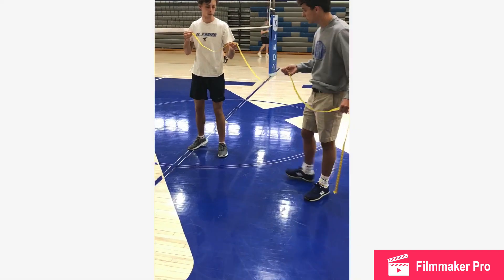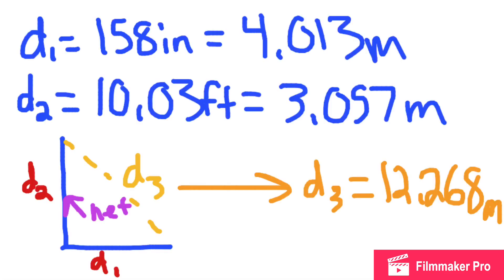As our team takes the measurements, we are ready to do some calculations. Starting off the calculations, we have D1, which equals the length of the ball hit: 4.013 meters. And the height at which the ball was hit, D2, is 3.057 meters. And through the Pythagorean theorem, we were able to calculate D3, the total distance traveled, which was 12.268 meters.